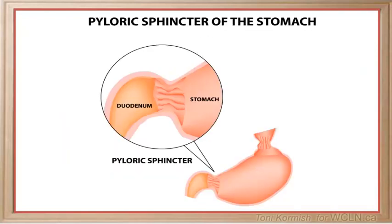At the end of the stomach is another sphincter called the pyloric sphincter. The pyloric sphincter controls the amount of acidic chyme that leaves the stomach into the duodenum. All of the characteristics that have been mentioned here are required to aid the stomach in performing its digestive functions.